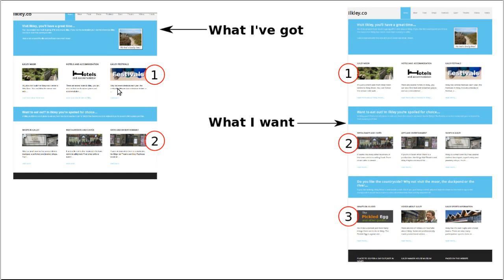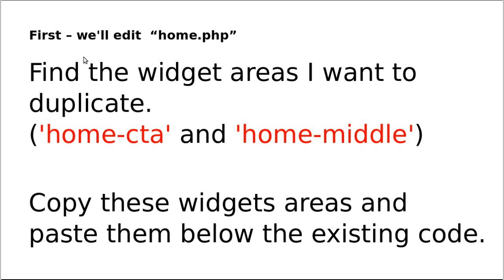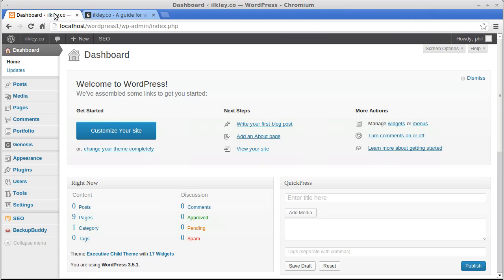We've got two widget areas and I want three. What we need to do is copy and paste the code blocks, then rename them so I can display more featured pages and banners in extra widget areas. First we need to edit home.php and find the widget areas to duplicate — home_cta (call to action) and home_middle. We copy these and paste them below the existing code. Go to Appearance > Editor in WordPress.